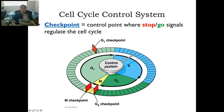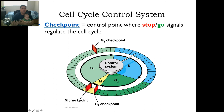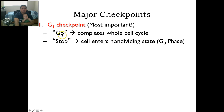In the cell cycle, you can't move to the next step without finishing the current stage. We have checkpoints — three that say you're allowed to move on. There's a G1 checkpoint, a G2 checkpoint, and an M checkpoint. The G1 checkpoint is the most important: it checks whether the cell has grown completely and is okay to start cell division. If go, you move through the whole cell cycle. If not, it goes to G0, meaning it's not going to divide at all.